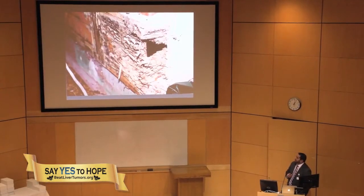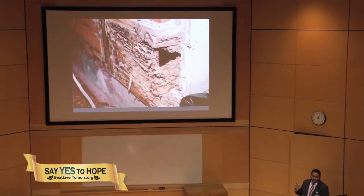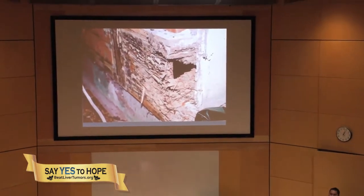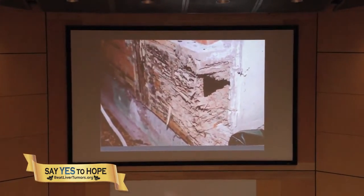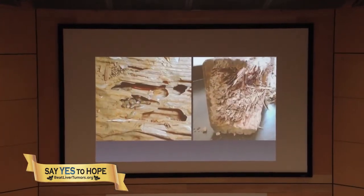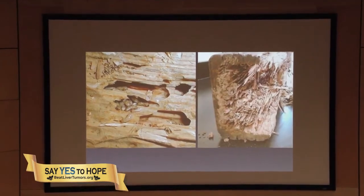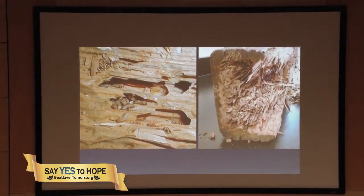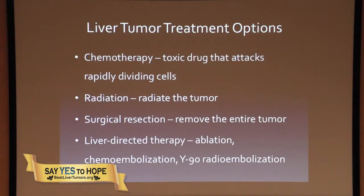To sort of explain this better, I'm going to use a little analogy here. This is what termite damage looks like. So anytime you have a problem, as you would at home, you have to start thinking what your treatment options are. So what would be your treatment options if you thought you had termites in your house? Obviously there's an analogy here and I think it's very similar to things like liver treatment.